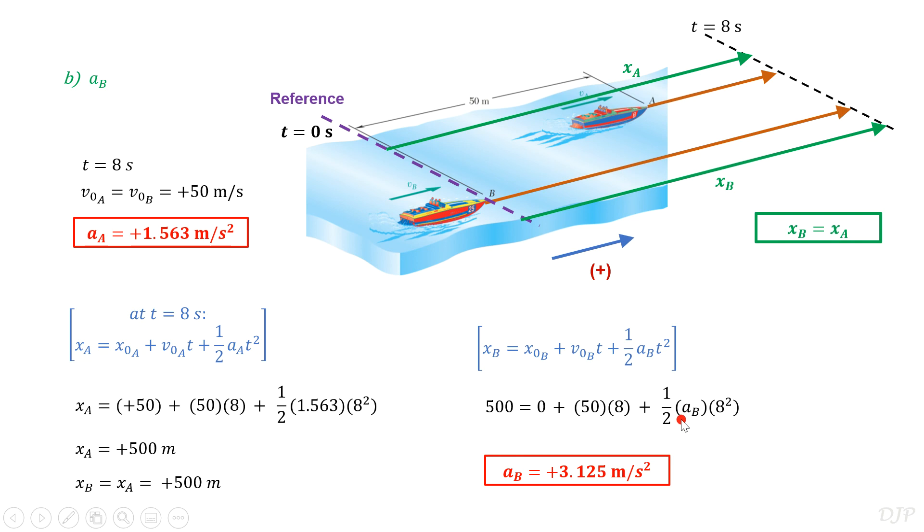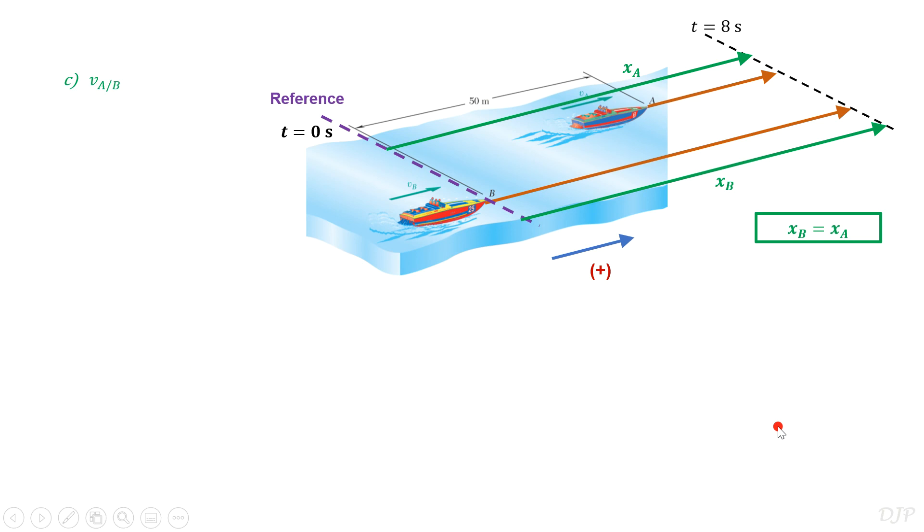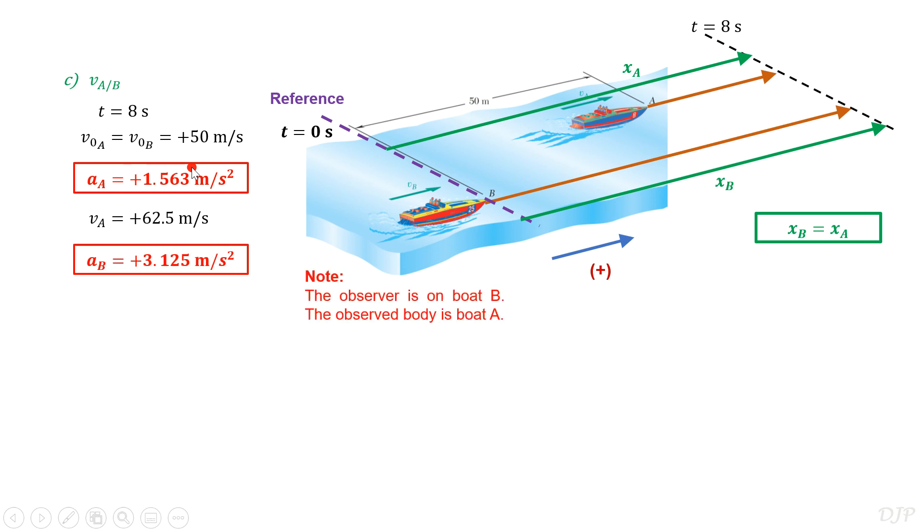Now, let's proceed with the last question, the relative velocity of boat A with respect to B at the time that they met. Let's recall again the given and obtained values. Take note that for this problem, the observer is on boat B while the observed body or particle is boat A.